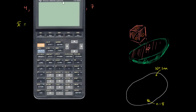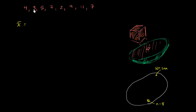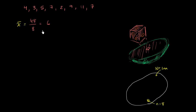Let's see if I can do this without a calculator. Four plus three is seven, plus five is twelve, plus seven is nineteen, plus two is twenty-one, plus nine is thirty, plus eleven is forty-one, plus seven is forty-eight. So I get 48 over eight data points. 48 divided by eight is equal to six. So our sample mean is six — it's our estimate of what the population mean might be.